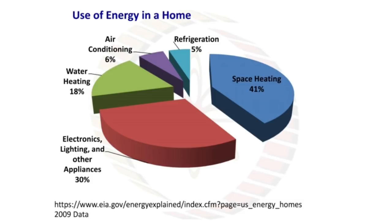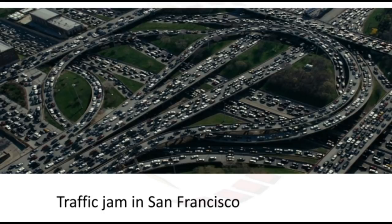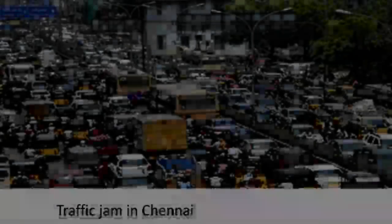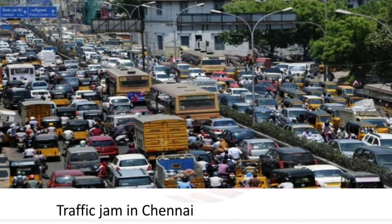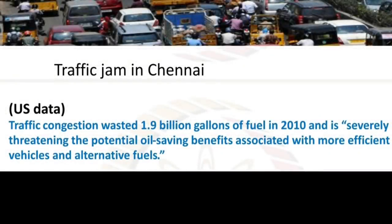Looking at pictures of traffic jams — in San Francisco, China, and Chennai — traffic jams are a total waste of time, fuel, and energy. According to US data, traffic congestion wasted 1.9 billion gallons of fuel in 2010, severely threatening the potential oil-saving benefits associated with more efficient vehicles and alternative fuels.